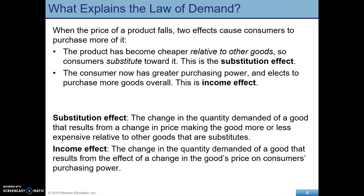Why, if the price falls, would consumers purchase more? On the one hand, if the price falls, the product becomes cheaper relative to other goods, so consumers substitute toward it — this is the substitution effect. At the same time, as the price of the good falls, the consumer now has greater purchasing power, spending less of their total budget, so the consumer can purchase more goods overall. This is the income effect.